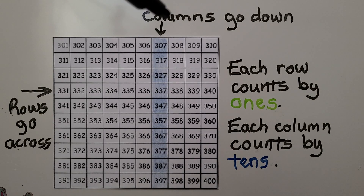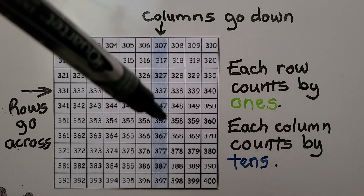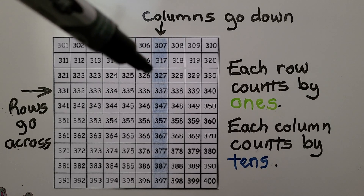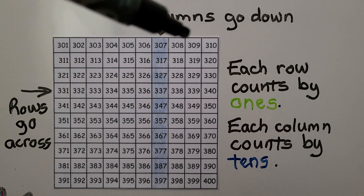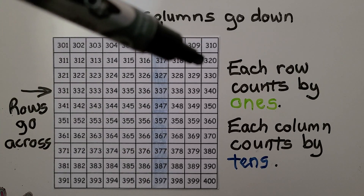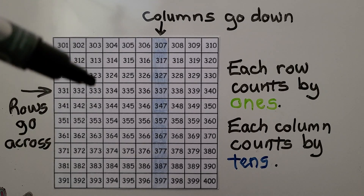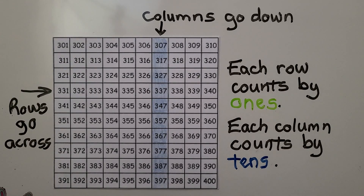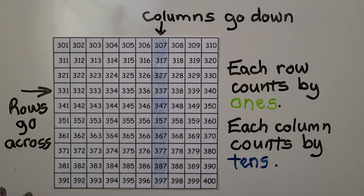And the columns that go down are counting by 10s: 307, 317, 327 — it's 10 more going down. 310, 320, 330. So each column has the numbers moving by 10 more, and the rows going across have them going up by 1 more.